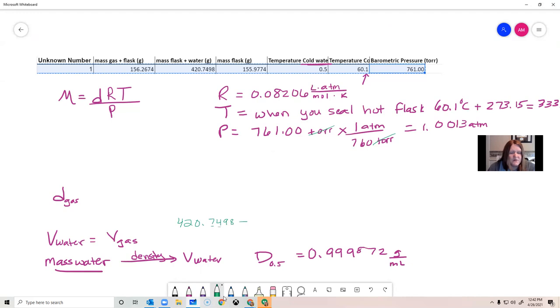So I'm going to take the flask plus the water. Your actual data is only going to have two decimal points here because you have to use the balance on your bench for that because it's too heavy for our analytical balances. Your empty weight will have all four significant digits because you'll use the balances in the instrument room for that. So this will give me the mass of the water that was sucked in after I broke the capillary.